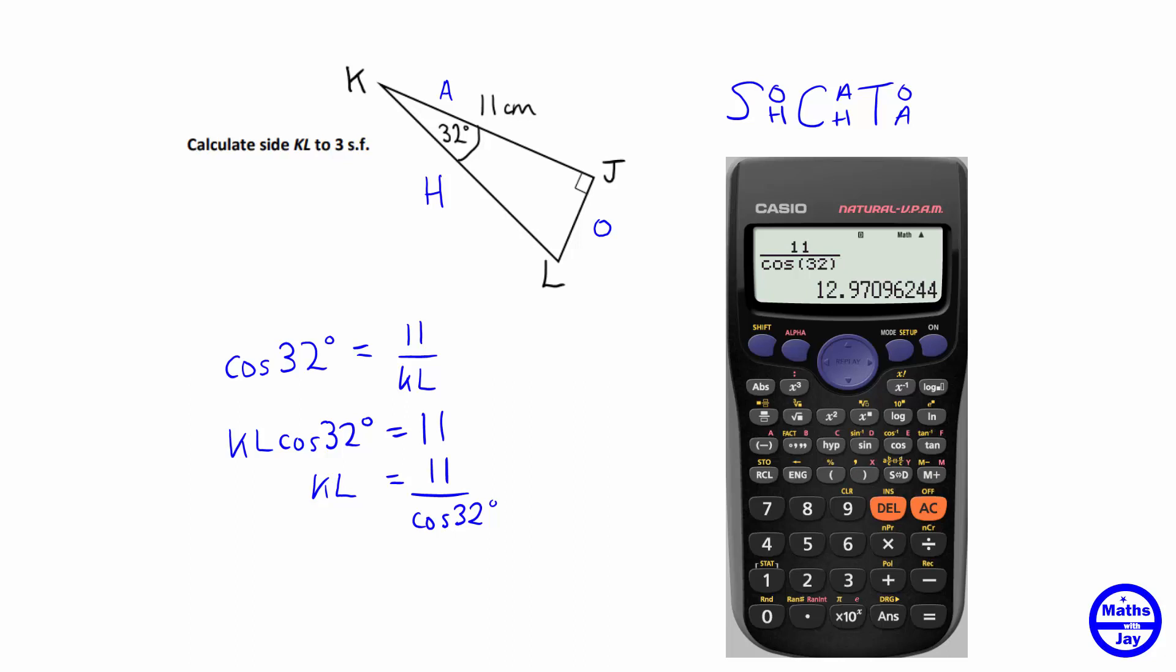Now we want the answer to three significant figures, so we look at the fourth figure, which rounds up the previous one. So that means the nine will round up to, well it would be ten wouldn't it, but that's really going to be zero and then the two rounds up to three, so the answer is going to be thirteen point zero.